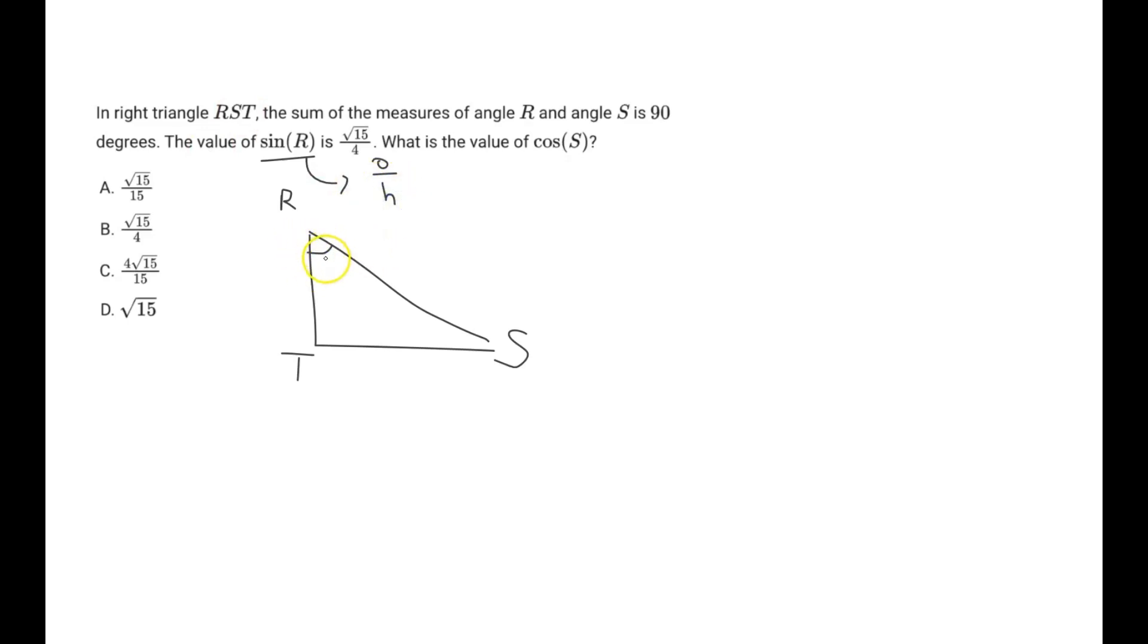So if we look at this angle measure, the opposite side length of this angle is over here. So this value will have square root of 15. And then the hypotenuse would just be the hypotenuse of the triangle, which is RS. So here we would have a value of 4.